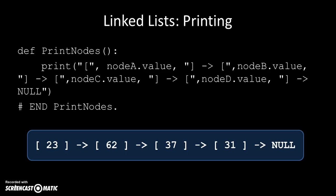So here we go: 23 points to 62, which points to 37, which points to 31, which points to null. Now I know that in Python null is represented as None (N-O-N-E), but the user doesn't need to know that. So in every printout we produce, we can just print out the word 'null' if that's what they're expecting.